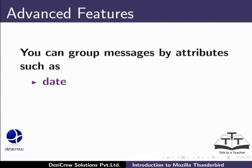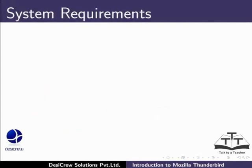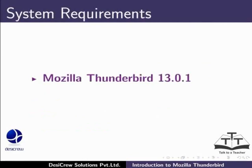You can group messages by attributes such as date, sender, priority or a custom label. Here we are using Mozilla Thunderbird 13.0.1 on Ubuntu 12.04.